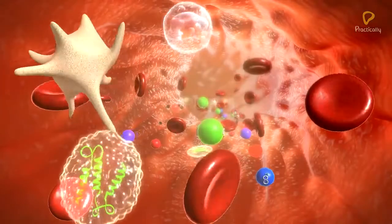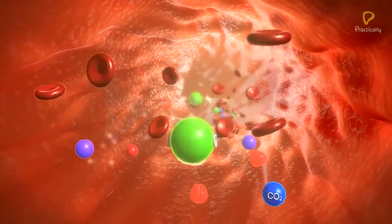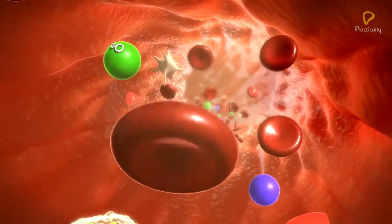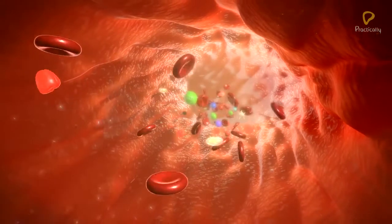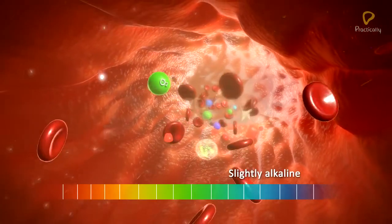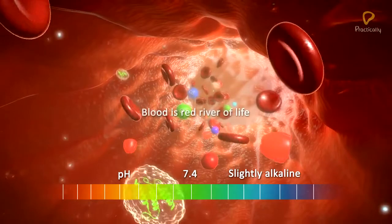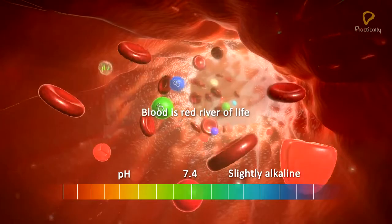Blood is a special connective tissue with a fluid matrix called the plasma. It is a red-colored, opaque, viscous fluid, slightly alkaline in nature with a pH of 7.4. It is referred to as the Red River of Life.